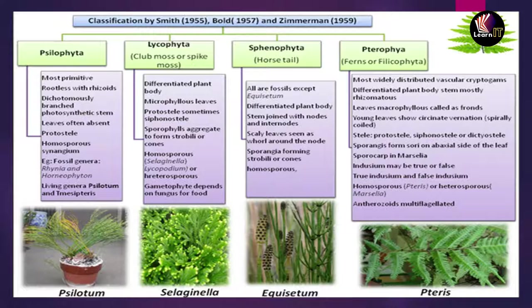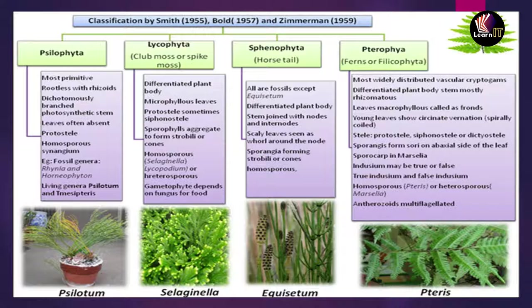The last classification is Pteropsida, which is the most widely distributed vascular cryptogam. The plant body is differentiated into stem and rhizomes, with different differentiation of roots, stems, and leaves.